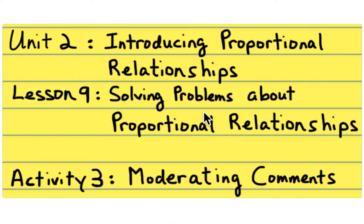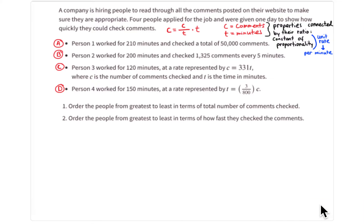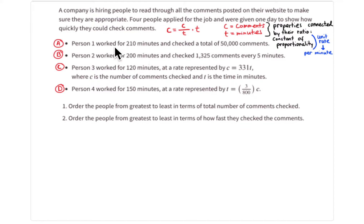This is lesson 9, solving problems about proportional relationships, activity 3: moderating comments. In this activity there are four people applying for the same job, and they're being tested during the interview to see how many comments they can look at on a website in a certain amount of time.